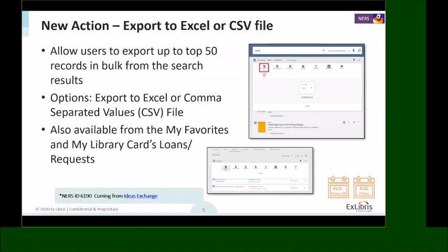The ability to export to Excel or CSV is a new enhancement coming for you. It was also raised in the idea exchange and will be released in both Primo and Primo VE in the August release. This shows the ability for a user to select a bulk of records from the search results and export them to Excel or CSV format.